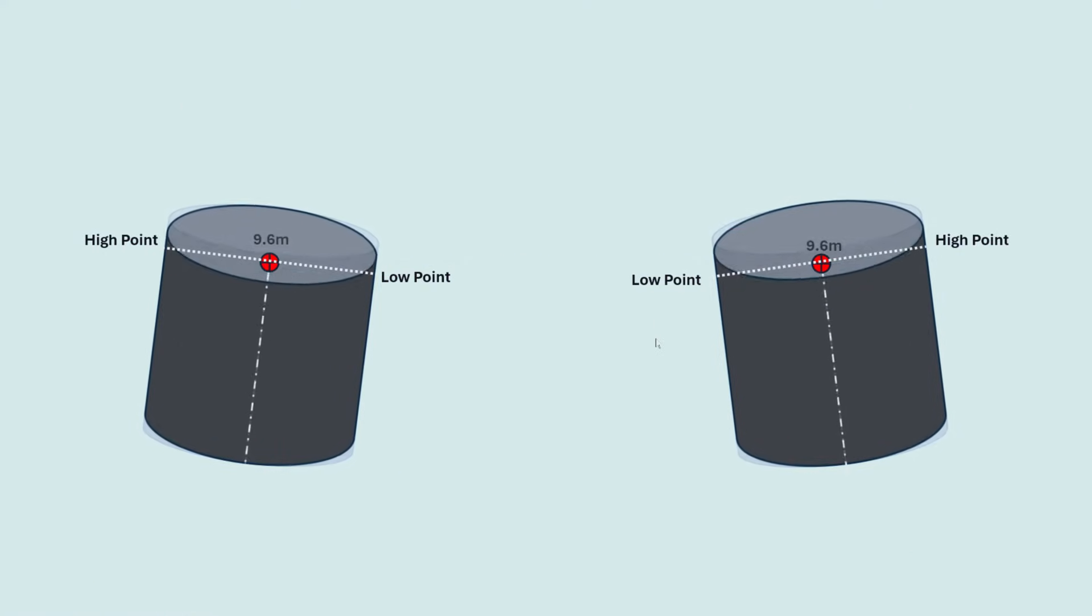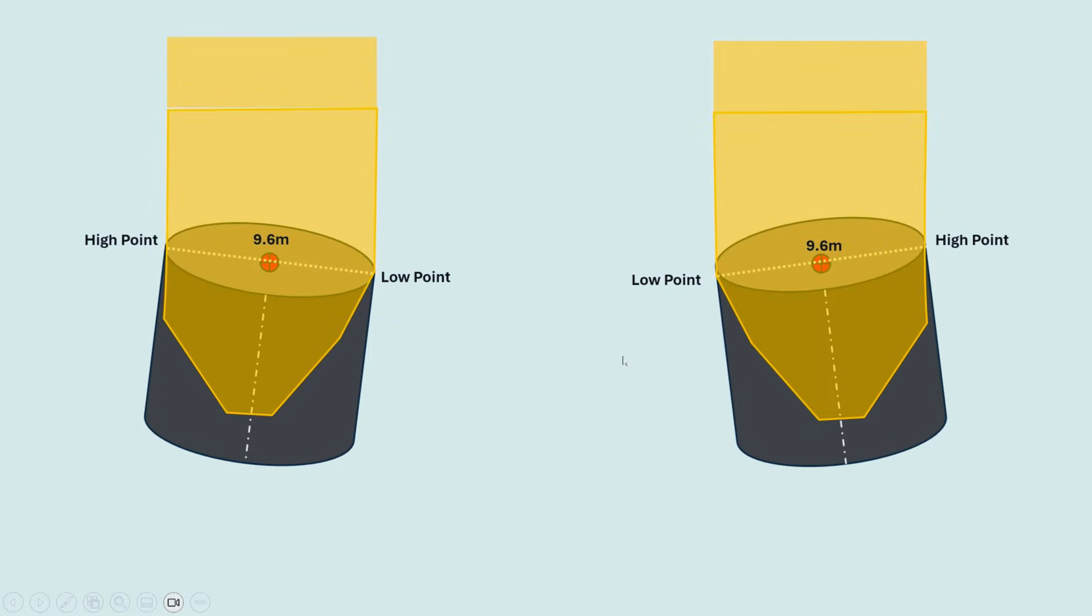And then they will cut the pile keeping the same high and low point. Once the pile is cut, surveyors can carry out leg to leg distance check just to be on the safe side. Now the transition piece will be stabbed onto the leg.